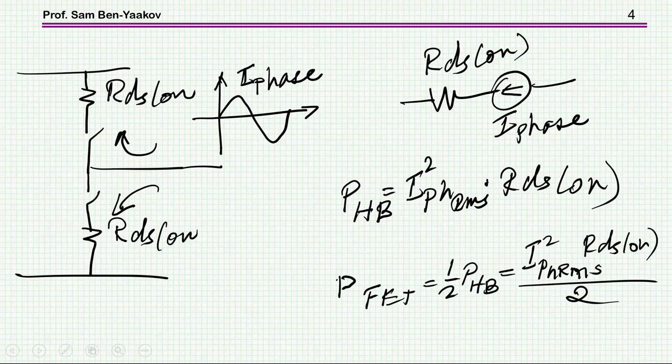Because if you have a sinusoidal waveform for the current here, and the current goes one way here, and then it goes to the lower transistor, the current sees at any given point RDS on, either this one or this one. So therefore, the power dissipated by the total half bridge is this current RMS squared times RDS on. This is the dissipation or loss of the half bridge.